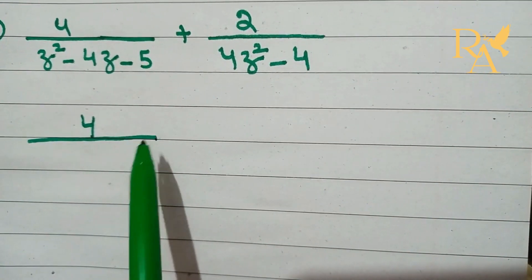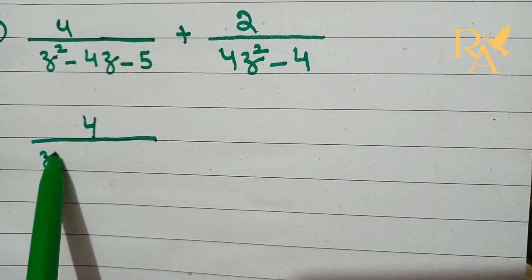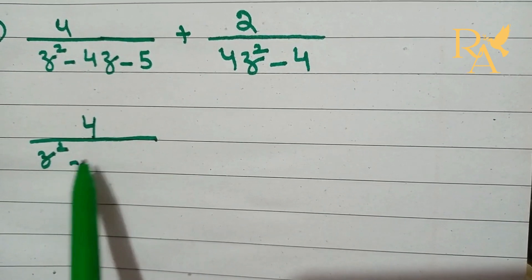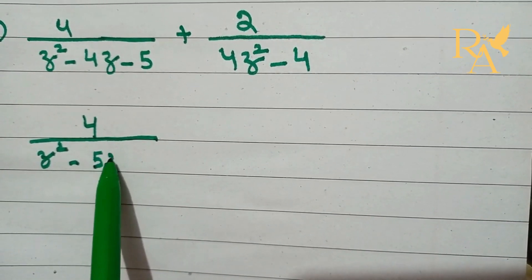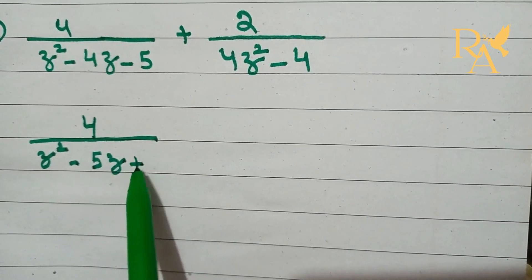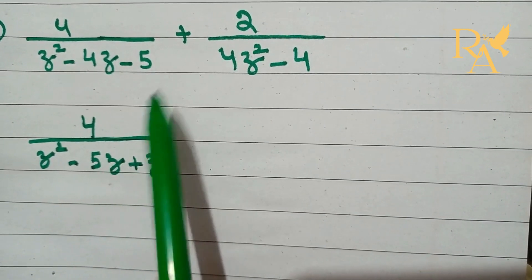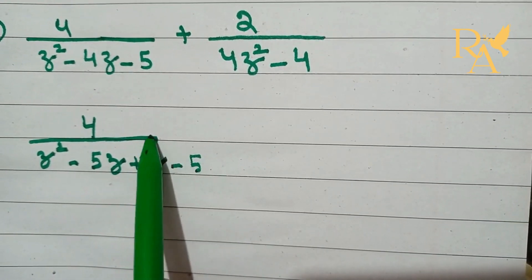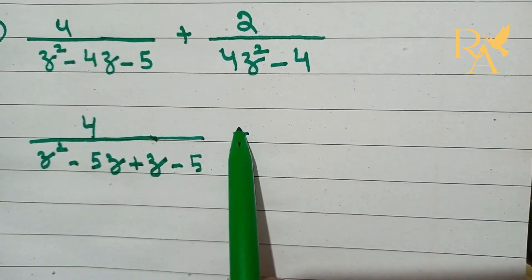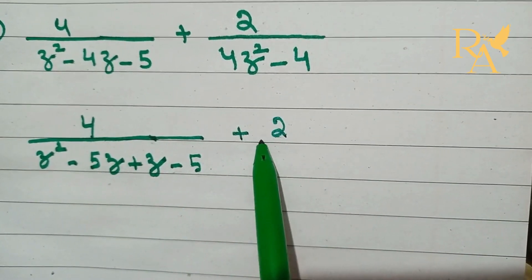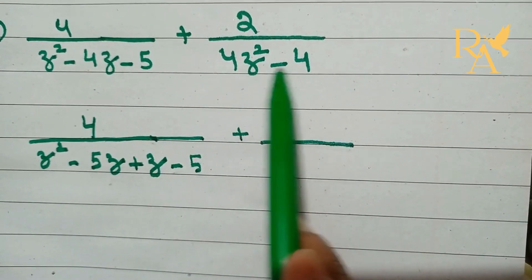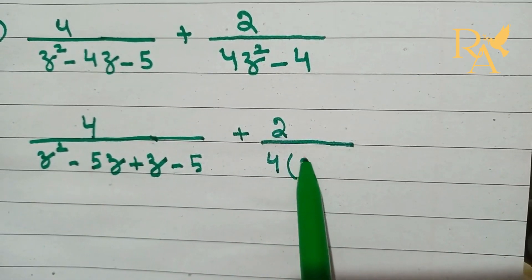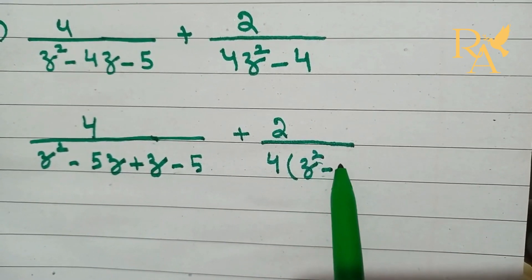For the first denominator, z square minus 4z minus 5: we split minus 4z as minus 5z plus z. We will write minus 5 the same. Minus 5 plus 2. Then 4 is common from the second denominator, giving 4z square minus 1.